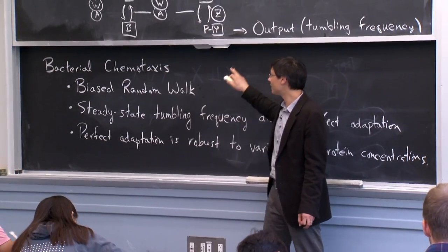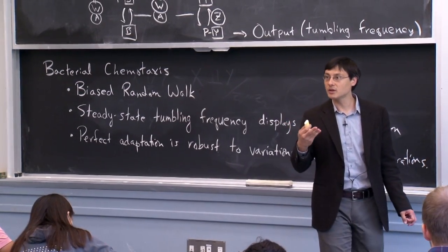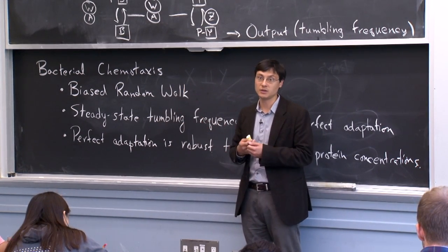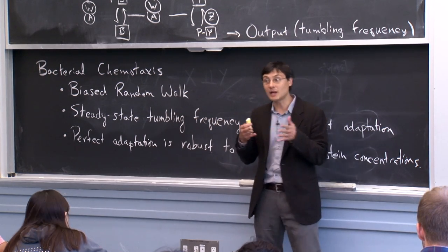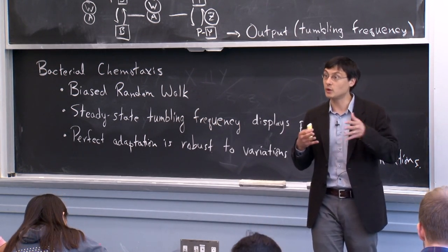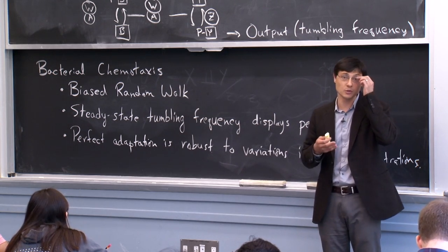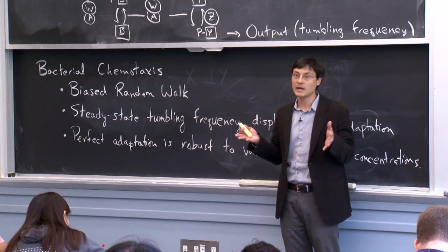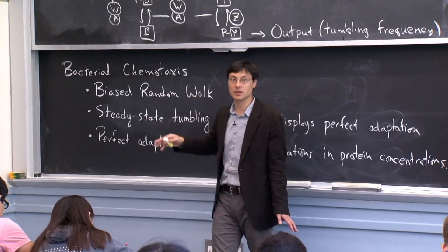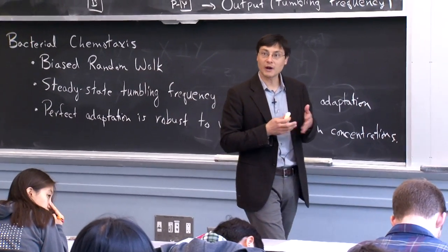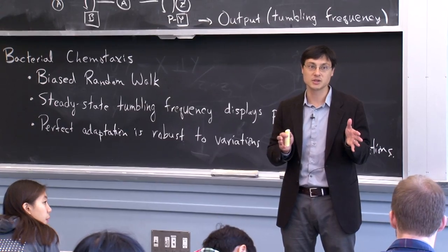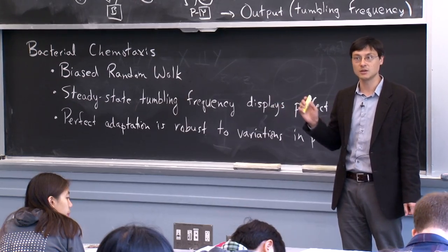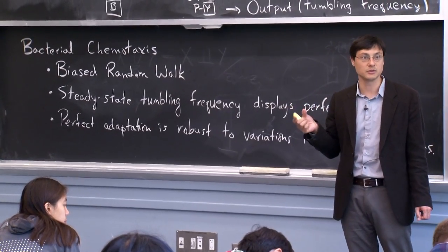The naive way to imagine this working is that the tumbling frequency would simply be a function of the concentration of the attractant. That would indeed allow a biased random walk toward food sources, but it would not be effective over a very wide range of concentrations. However, if you experimentally ask how well bacteria can swim towards attractants, it turns out they can respond over five orders of magnitude of concentration — which is really quite incredible given the engineering challenge these one-micron cells are overcoming.